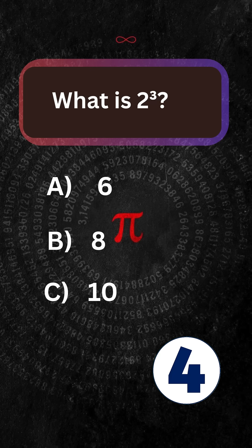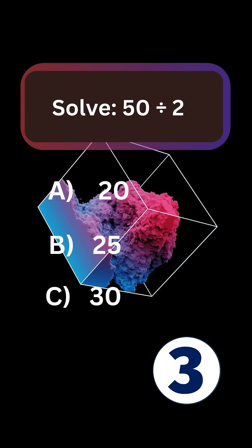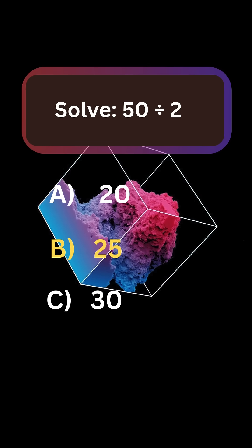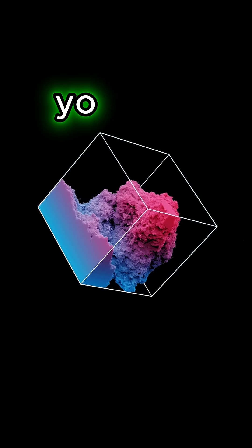What is 2 cubed? Answer: 8. Solve: 50 divided by 2. Answer: 25. If you nailed all 10, you're not just smart. You're a math genius.